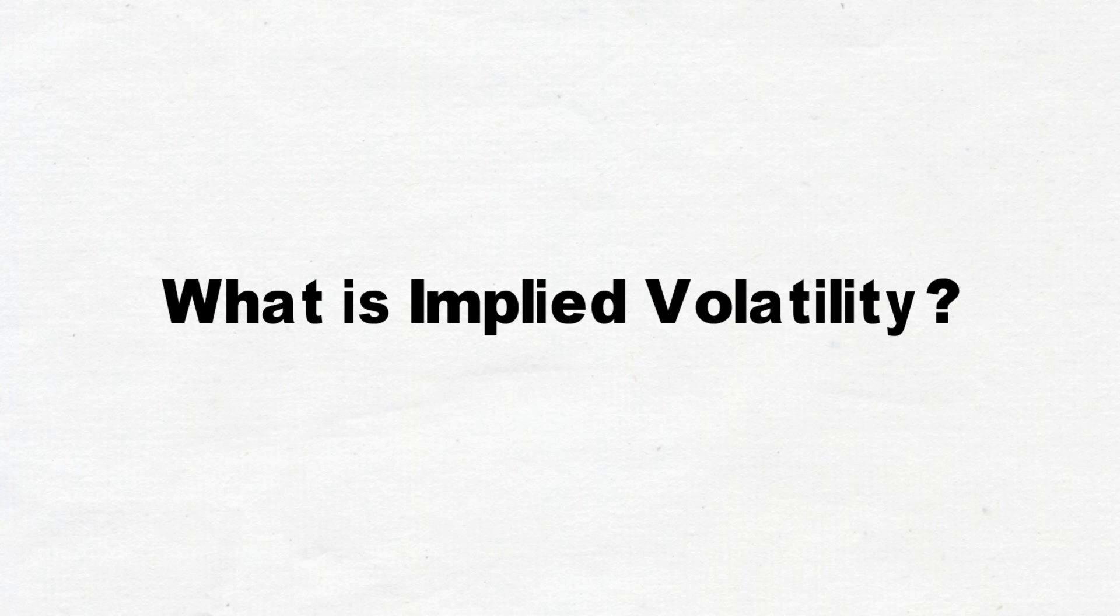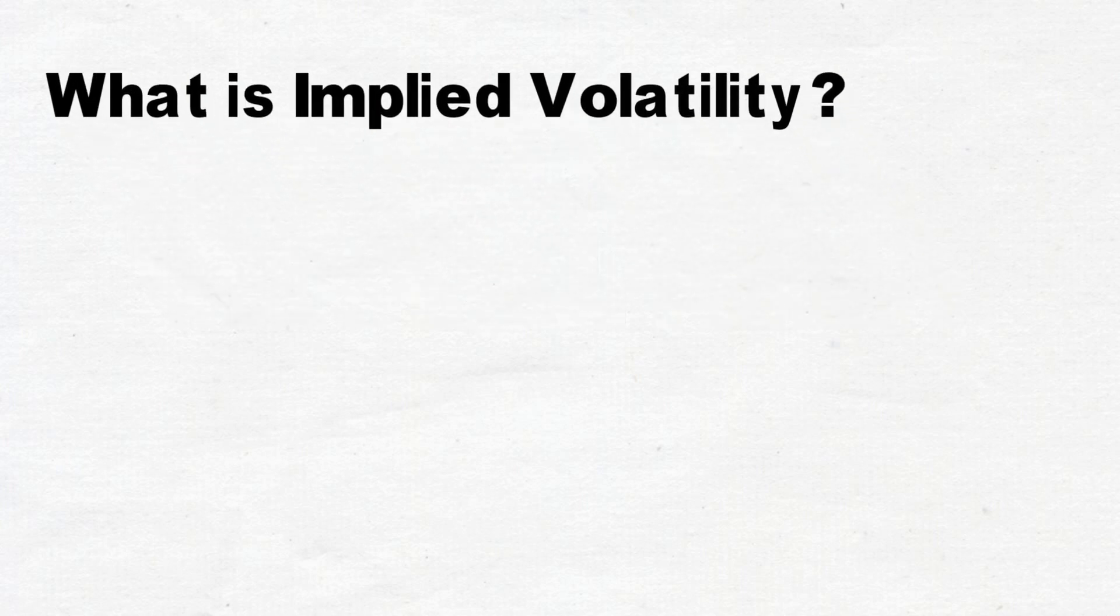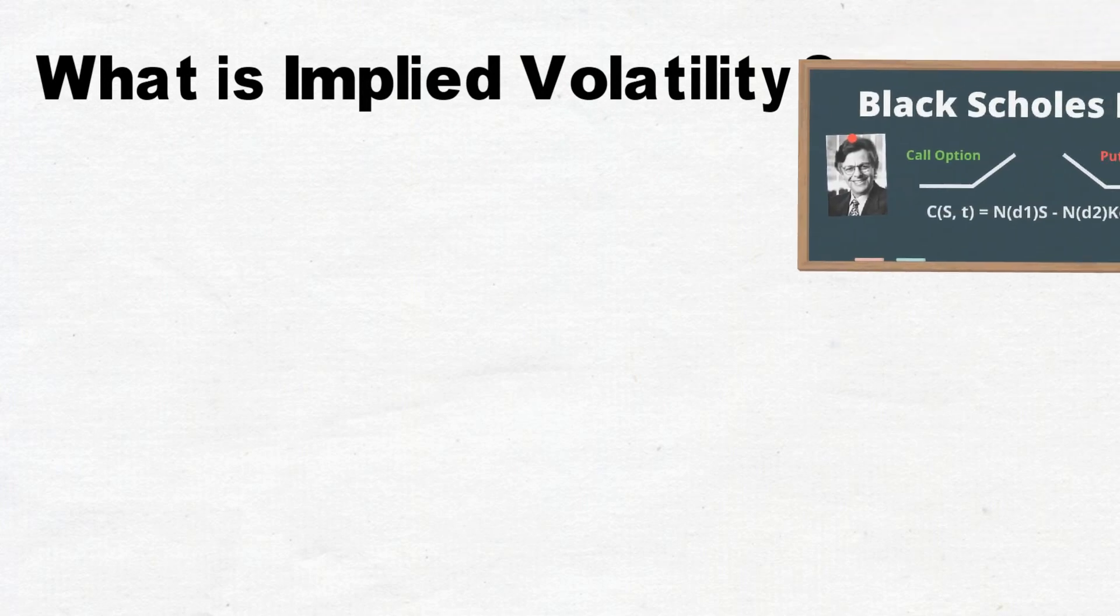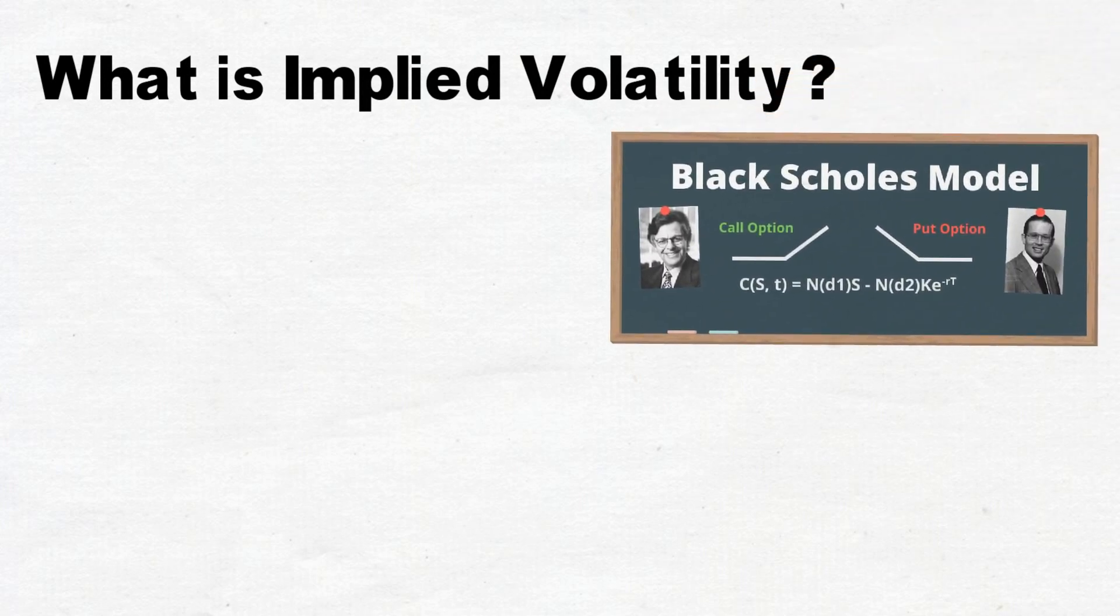First of all, what is implied volatility? Implied volatility can be derived from options pricing models such as the Black-Scholes options pricing model. It can be thought of as the expected likelihood of certain price changes in the underlying asset. But what does that mean?